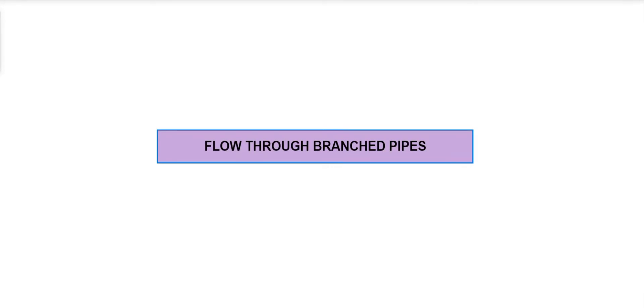In today's video, we will discuss the next topic of flow-through pipes, which is flow-through branched pipes. First of all, let's understand what we mean by a branching pipe system. I am having three or more reservoirs, and those reservoirs I have connected using pipes.